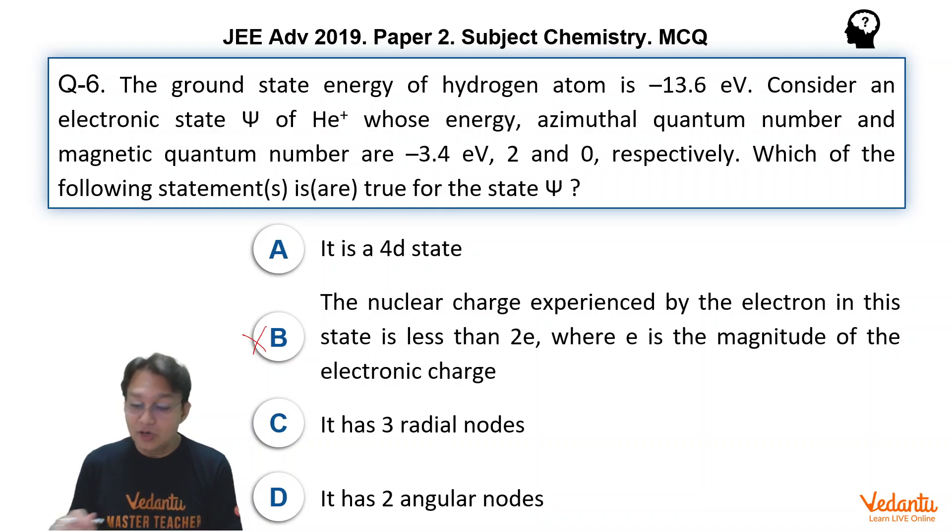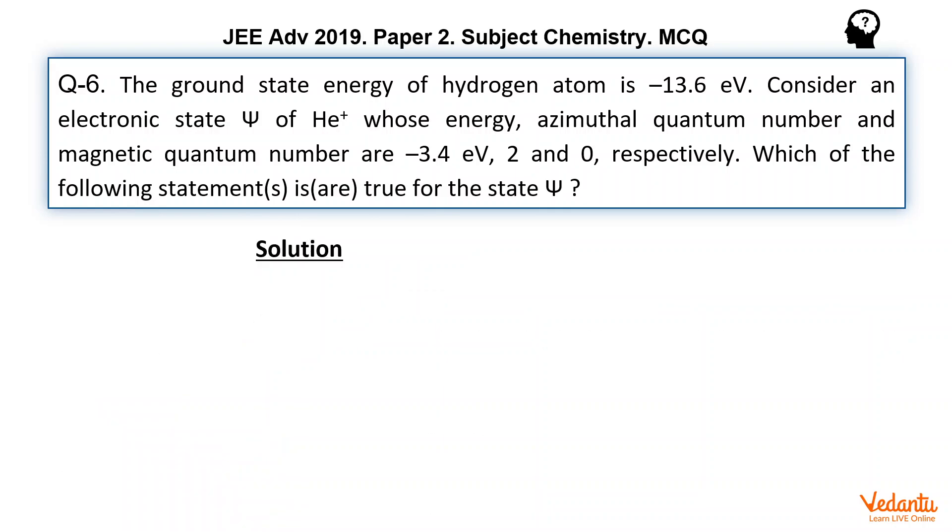Let us see all other options and how to solve them. So first let us write the expression. We know that En is equals to minus Z square upon N square into 13.6. That's the general expression, and for hydrogen atom Z is equals to 1. In the ground state N is equals to 1. So we got E1 equals to for hydrogen atom minus 13.6 electron volt.